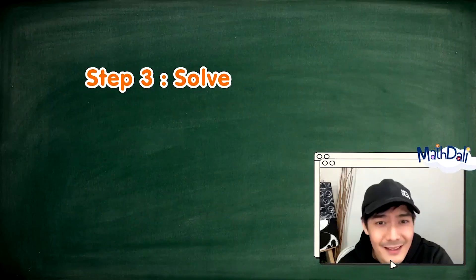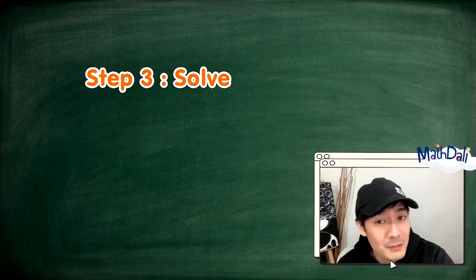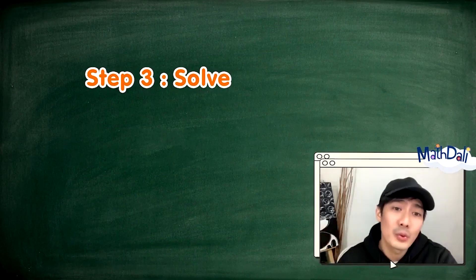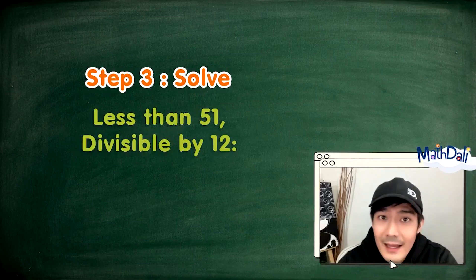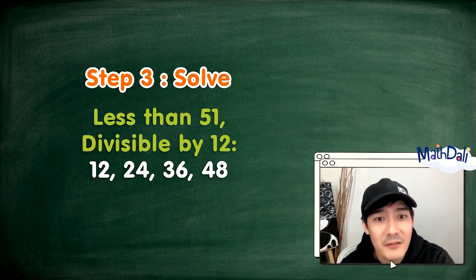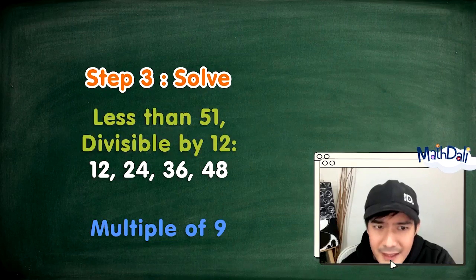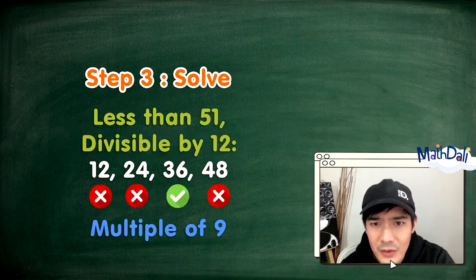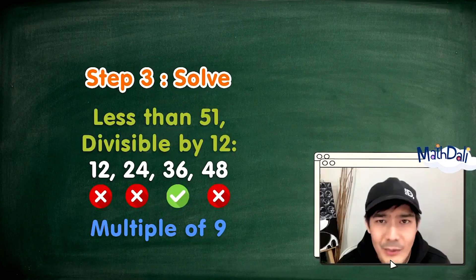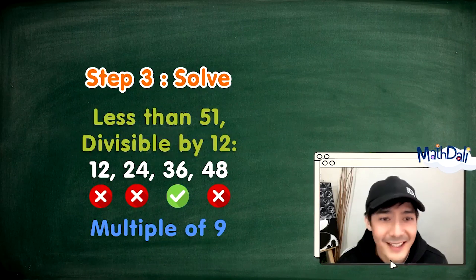I-solve na natin ang problema — third step: solve the problem. Alam natin na less than 51 years old lang si Jin, ibig sabihin kailangan nating maghanap mula 1 to 50 ng numbers na divisible by 12. That's 12, 24, 36, and 48. At nabanggit din natin na ito ay multiple of 9, so sa apat na numbers na nakuha natin, we can eliminate the numbers that are not a multiple of 9 — tulad ng 12, 24, at 48. So posibleng 36 nga yung final answer.